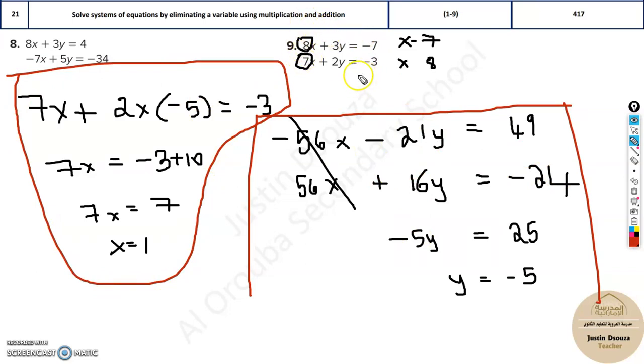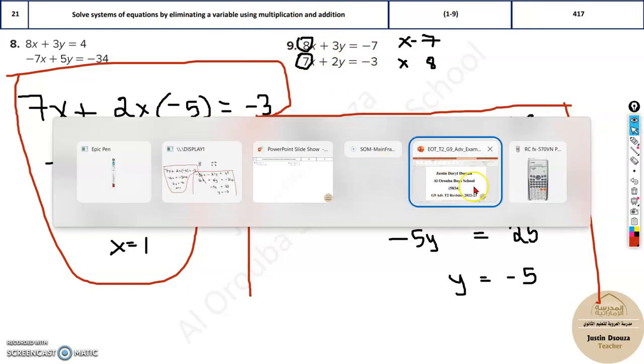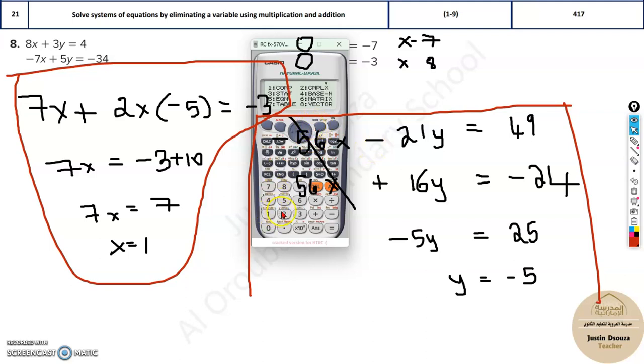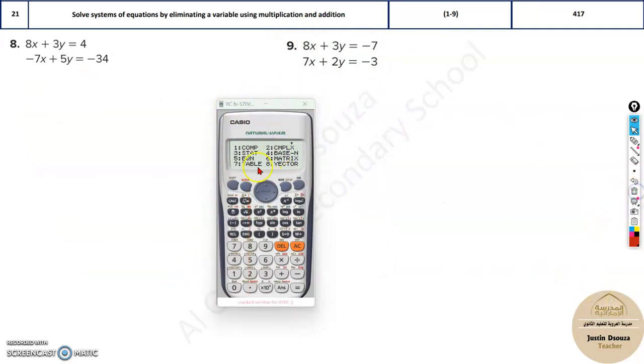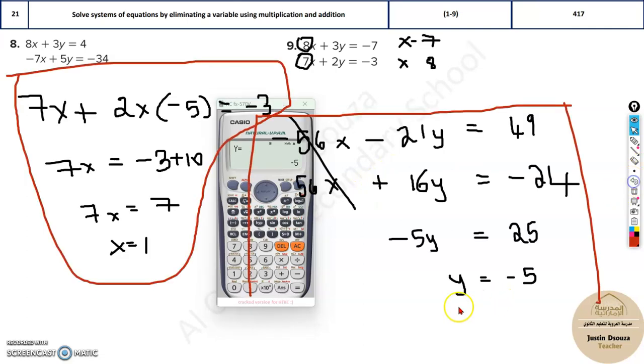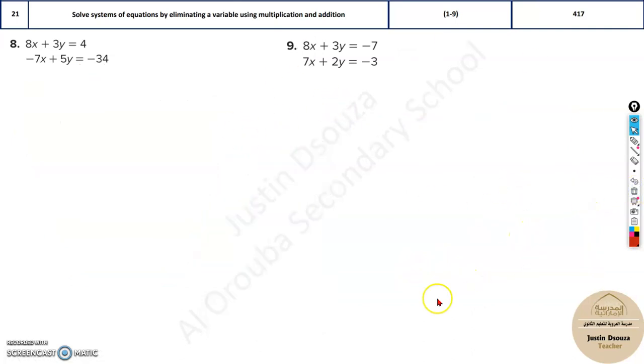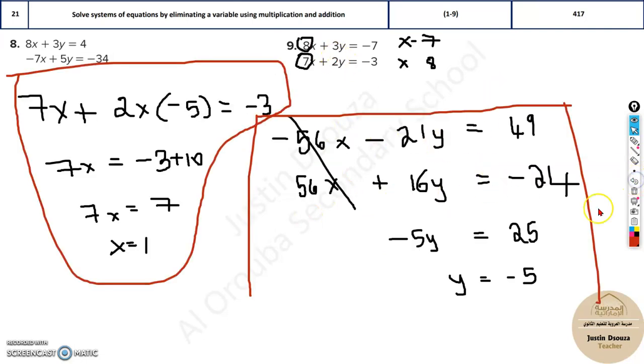Also, you can quickly check it out in your calculator just to cross-verify your answers. We have got minus 5 and x is 1. Let's just do it. 5 and 1. Put in the coefficients. x is 8, 3, minus 7, 7, 2, minus 3. And you'll get x is 1 and y is minus 5. The same answers which we had got as well. 1 and minus 5. But you cannot do it in calculator. You can just check your answers using calculator. If your answers are wrong, you can try checking the steps. Some way, you might have gone wrong. Do it carefully and you can easily solve it up.